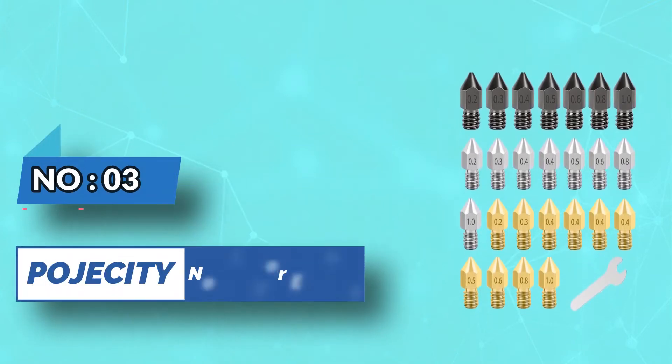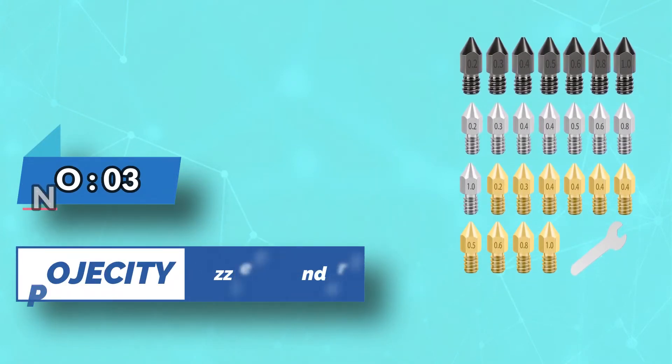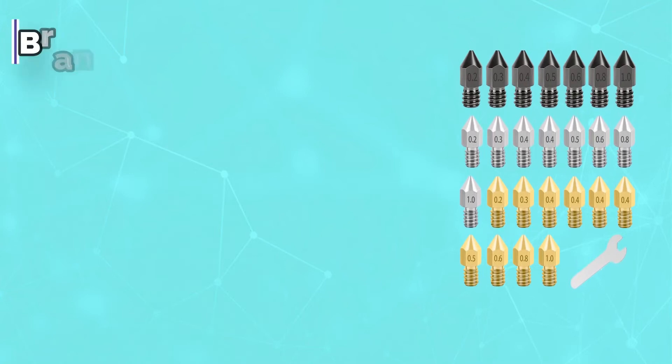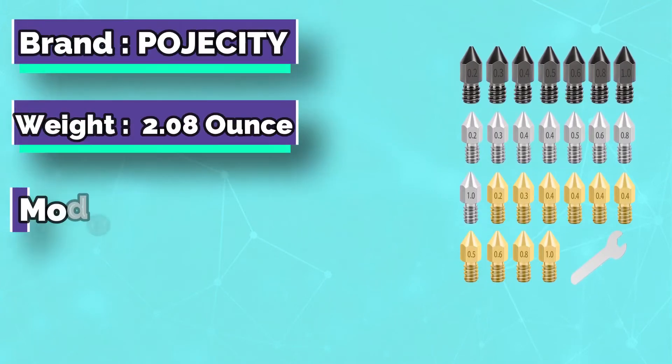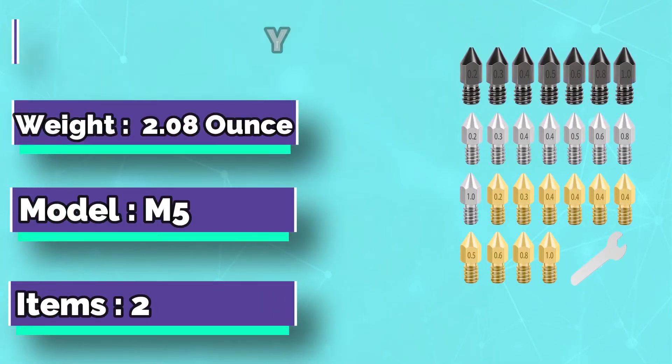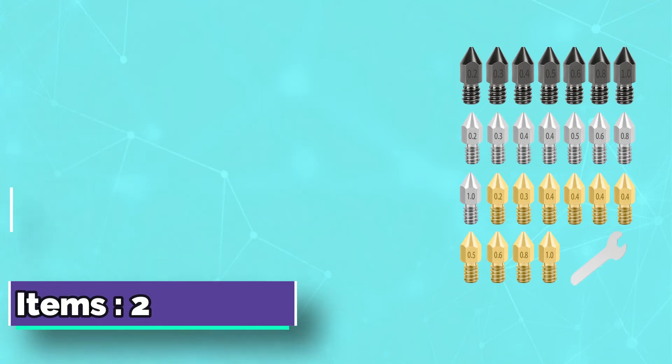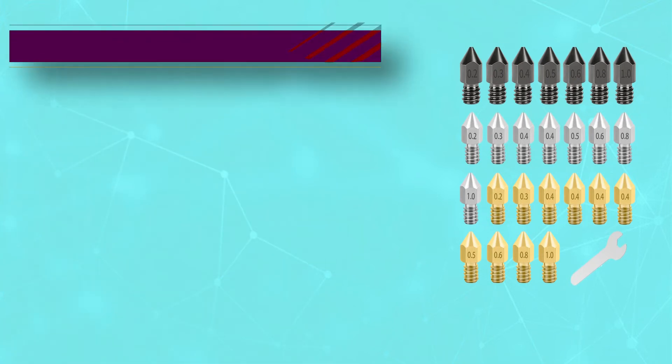Number 3: Bojessity Nozzles for Ender 3. Premium quality MK8 nozzles are made of high-quality hardened steel, stainless steel, and brass. Heavy-duty and provide a long service life. Easy to install and change.